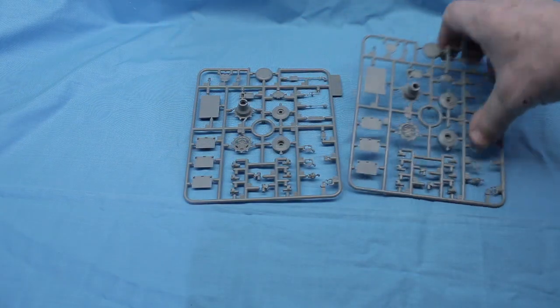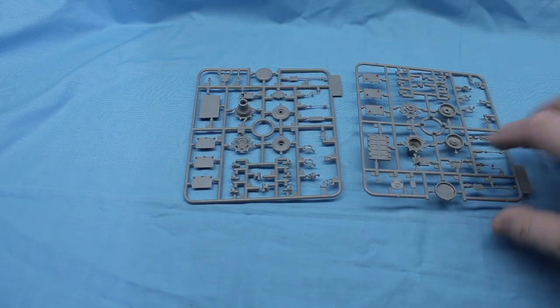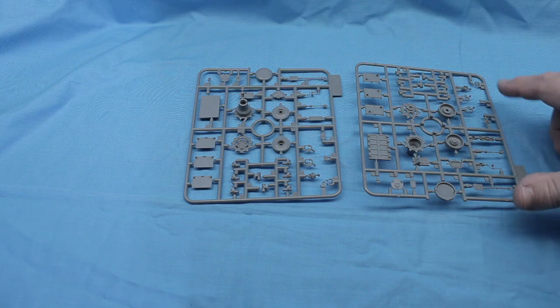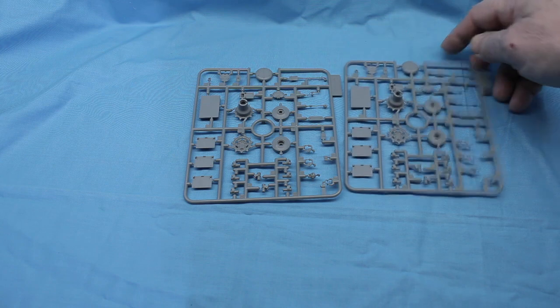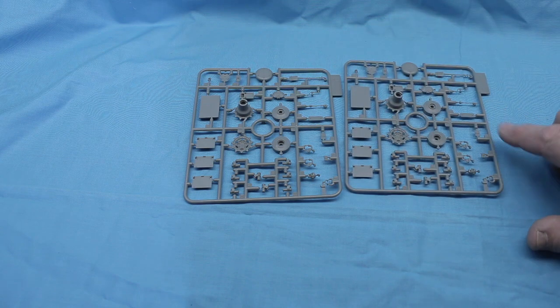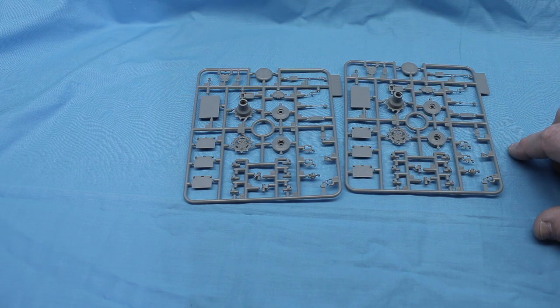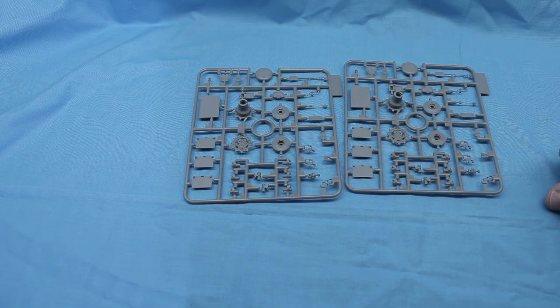You're going to have two of these. This is your drive sprocket and some other parts, and then track assembly. A lot of details, little bitty things. This is actually from the Leopard 2A6 model, so there's several parts on here you're not going to be using.